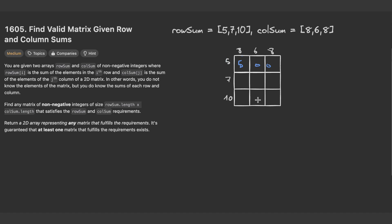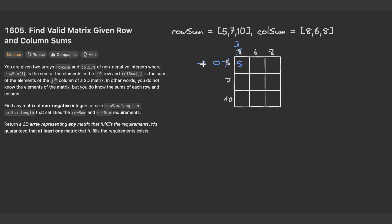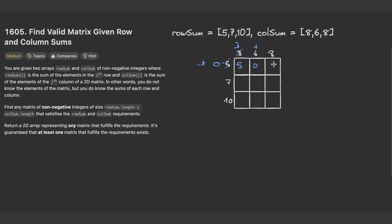Now let me walk through how to implement this step by step using the greedy approach. Starting at position (0,0), I take the minimum between the row sum and the column sum — here the minimum of eight and five is five, so I place five. Then I update both sums by subtracting five: the row sum becomes zero and the column sum becomes three. Moving to position (0,1), the minimum of zero and seven is zero. Moving to (1,0), the minimum of seven and three is three, so I place three and update: the column sum becomes zero and the row sum becomes four.